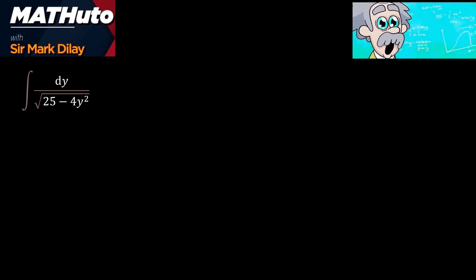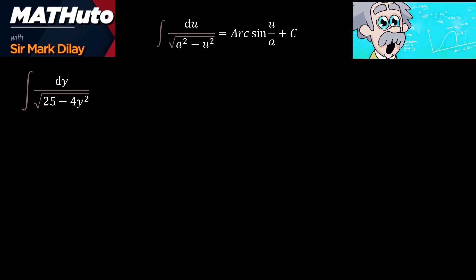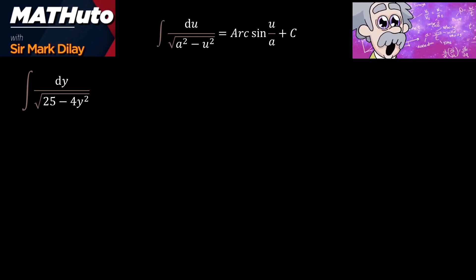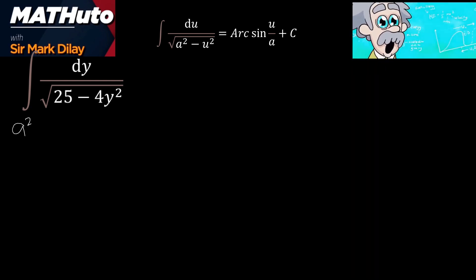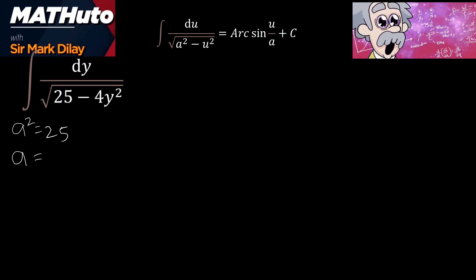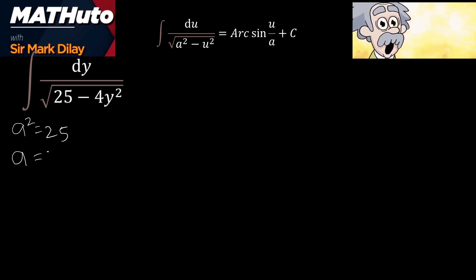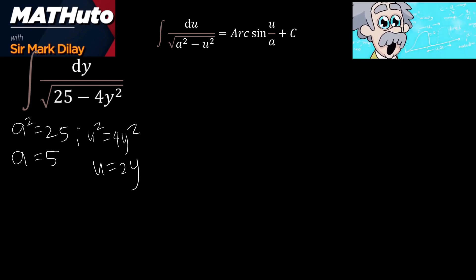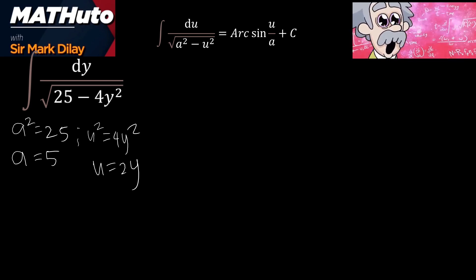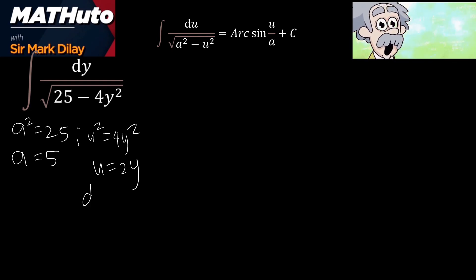Let us have our next example: the integral of dy over the square root of 25 minus 4y². Remember the steps and procedures. First, identify u and a. a² here is equal to 25, so the value of a is 5. Then, let us solve u²: u² is equal to 4y², so the square root of u² gives u equal to 2y. Next, find the derivative of u.